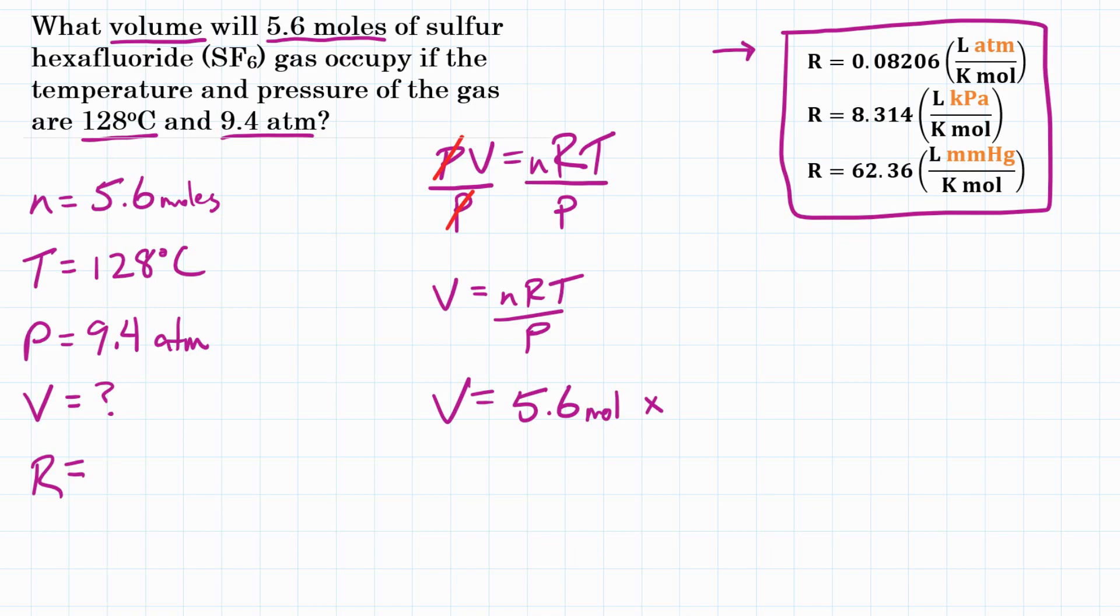You generally are going to pick the universal gas constant which has the same pressure units that you are using for your pressure in the equation or the pressure units that you want in the end. So because our pressure is in atmospheres, I am going to pick the universal gas constant that uses atmospheres.